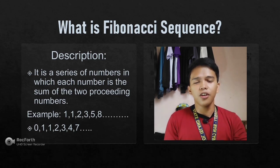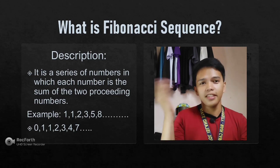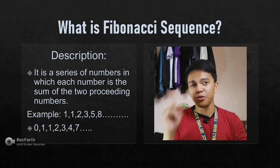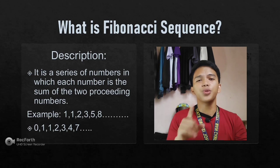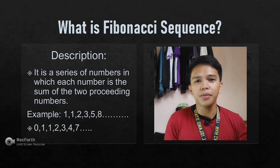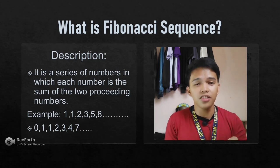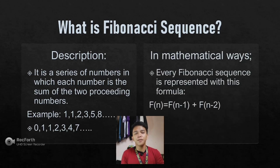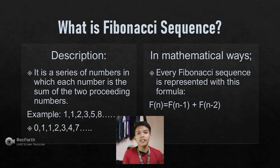If your sequence starts with 0: add 0 plus 1, it equals 1; add 1 plus 1, it equals 2; add 2 plus 1, it equals 3, and so on and so forth. Every sequence is called a Fibonacci sequence. In mathematical ways, every Fibonacci sequence is represented with a formula, which we can use to find the nth digit in the sequence.